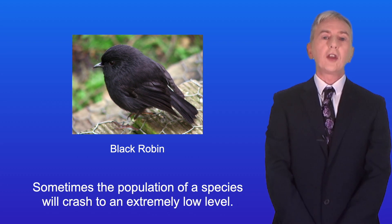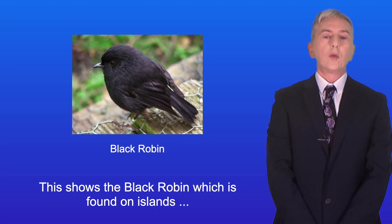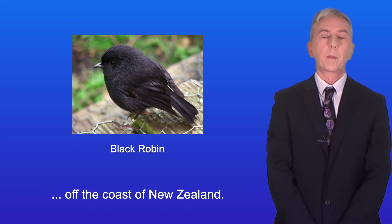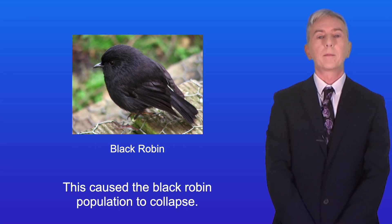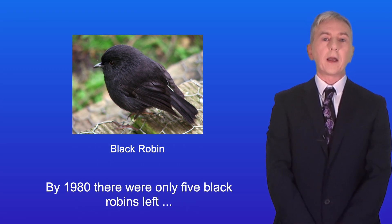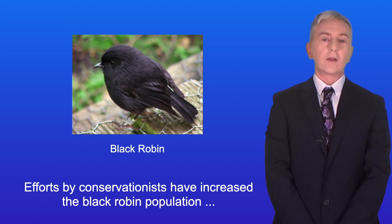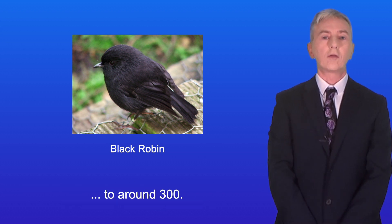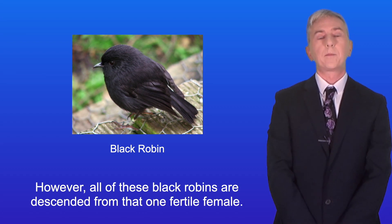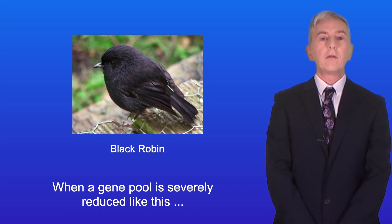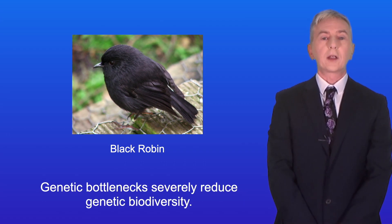Sometimes the population of a species will crash to an extremely low level. The black robin, found on islands off the coast of New Zealand, had its population collapse after rats and cats were introduced by humans. By 1980 there were only five black robins left, including one fertile female. Conservationists increased the population to around 300, but all are descended from that one fertile female. When a gene pool is severely reduced like this, scientists call it a genetic bottleneck, and genetic bottlenecks severely reduce genetic biodiversity.